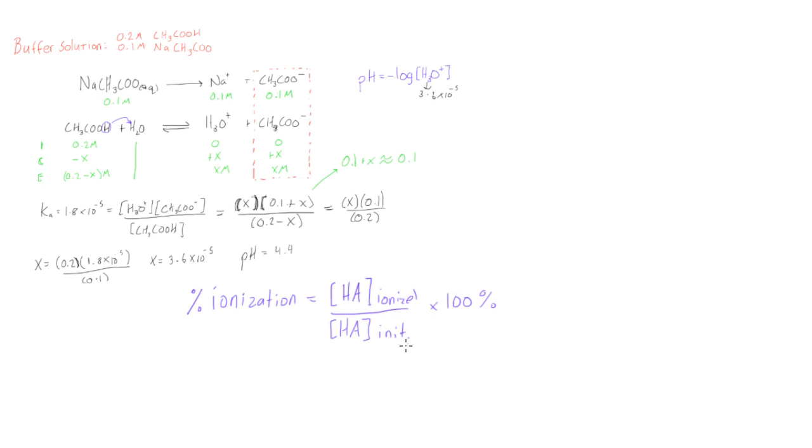We know that our initial concentration of acetic acid was 0.2 molar, so we can put that on the bottom. The concentration that became ionized is basically the concentration of everything that turned into its conjugate base, which was x molar. We can see that x was in fact 3.6 times 10 to the negative 5.